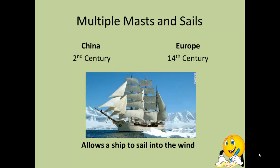Multiple masts and sails is another development the Chinese had far earlier than the Europeans. The Chinese developed it in the 2nd century, while the Europeans didn't develop it until the 14th century — a 1,200-year gap. By having multiple sails and masts, these ships can sail into the wind by opening certain sails based on wind direction, travel much faster, make significantly better time, and be much more direct in where they're traveling.